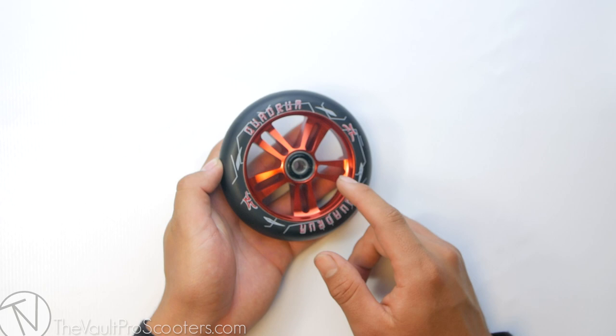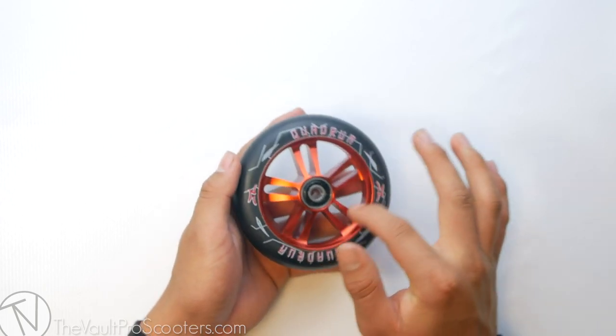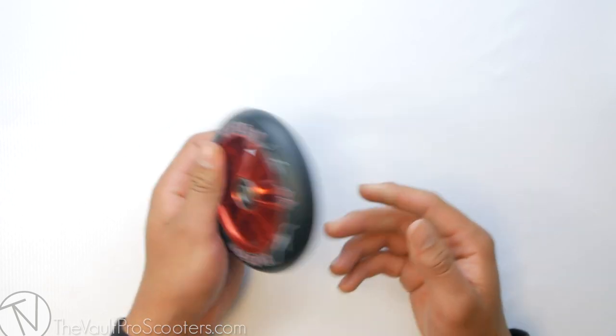It does also have the twin five spoke core right here, just like the Hulk wheel. Now I'm weighing this bad boy.